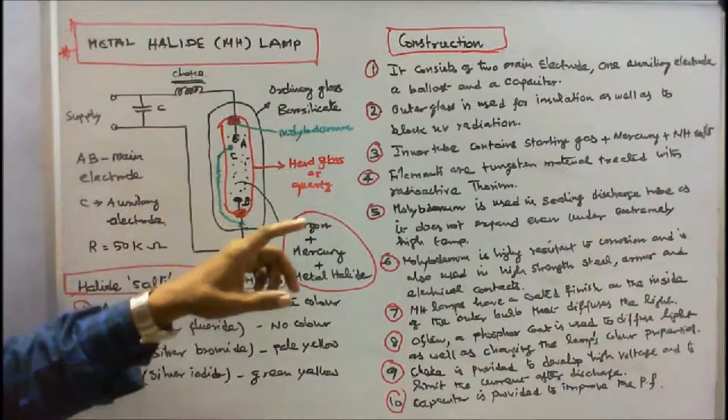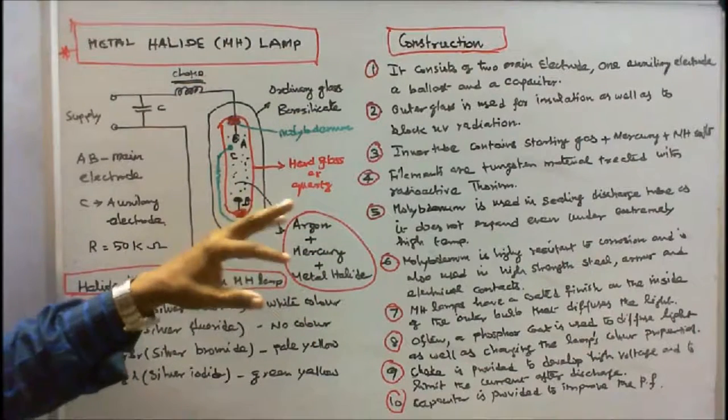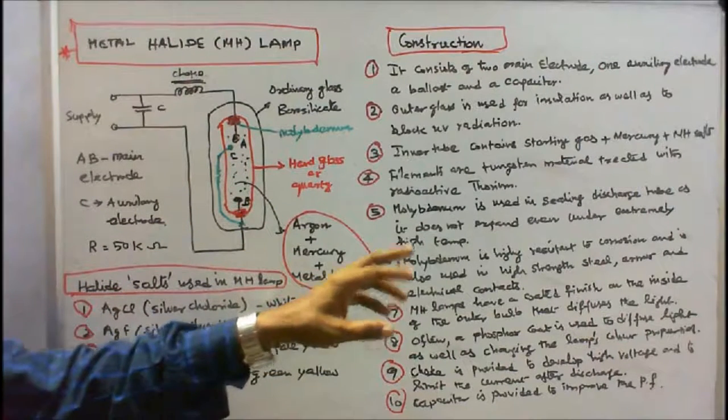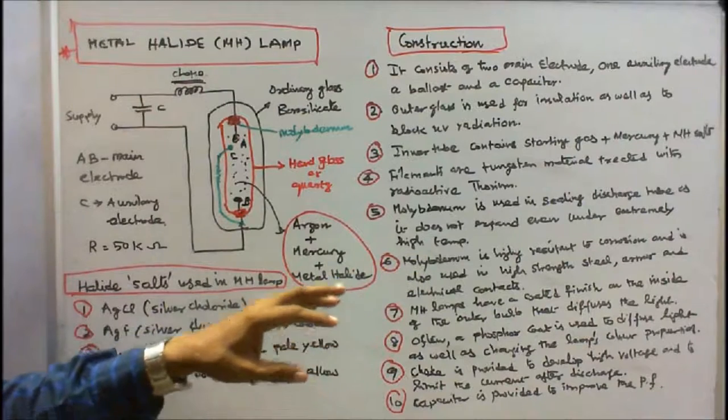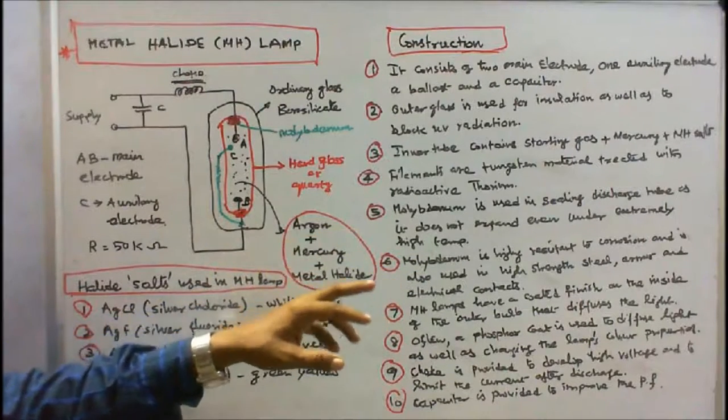Molybdenum is used in sealing the discharge tube as it does not expand even under extremely high temperature. Molybdenum is highly resistant to corrosion and is also used in high strength steel armor and electrical contacts.